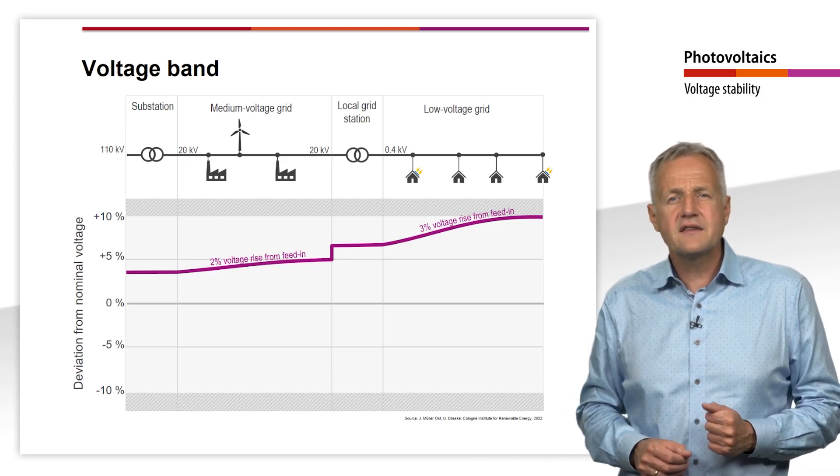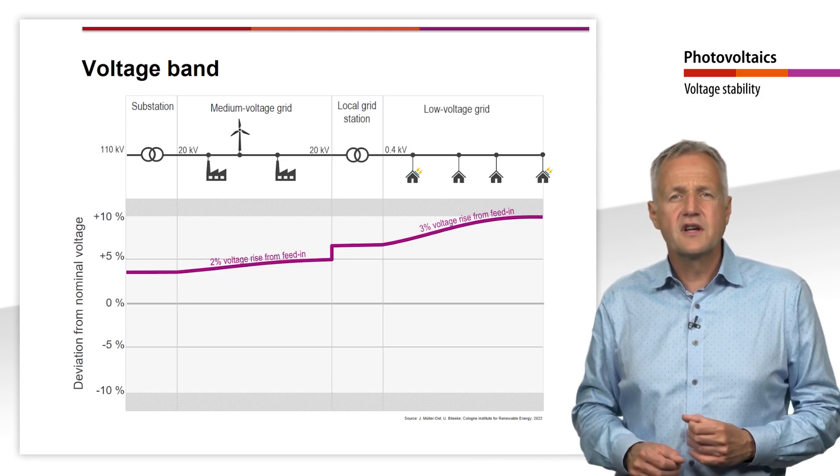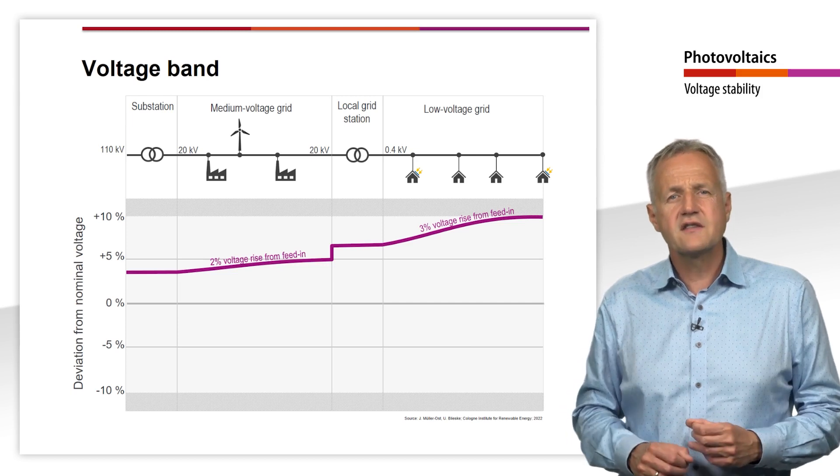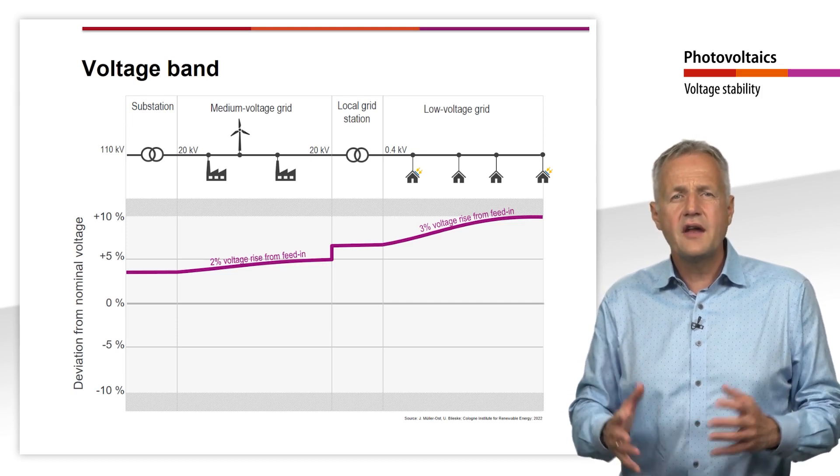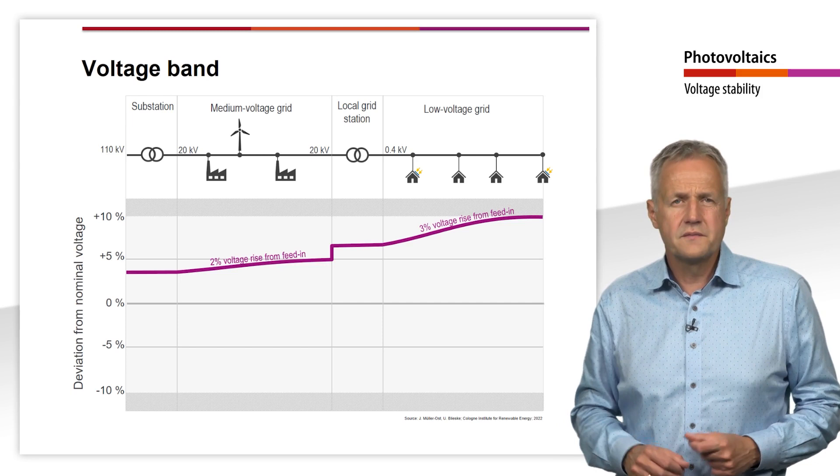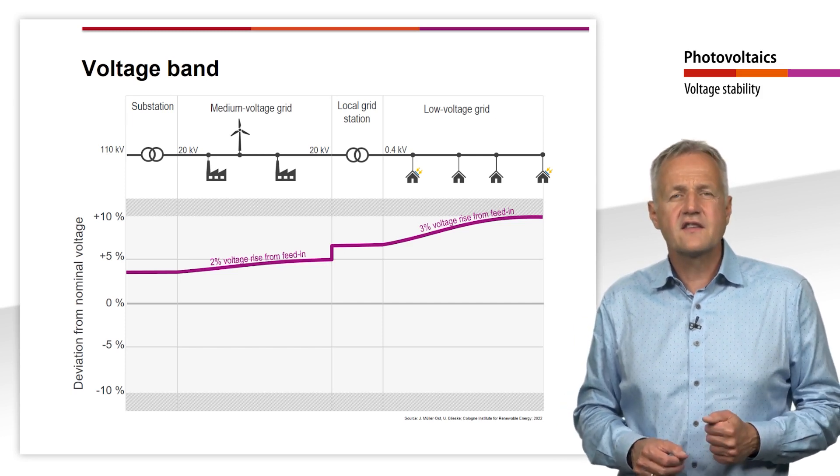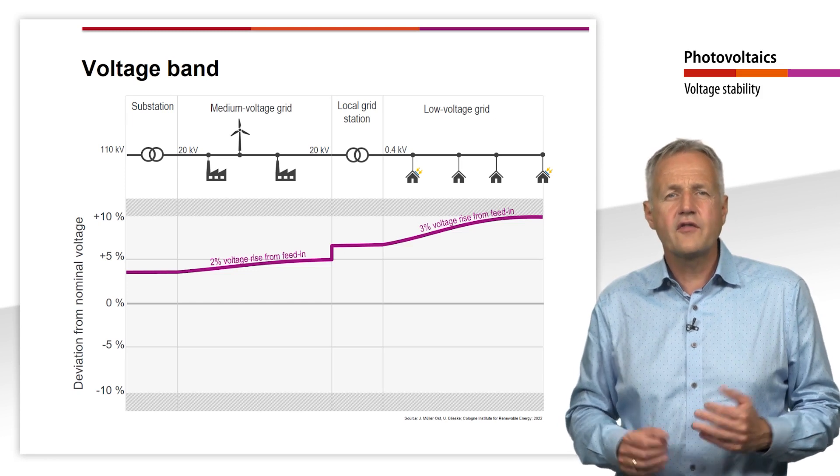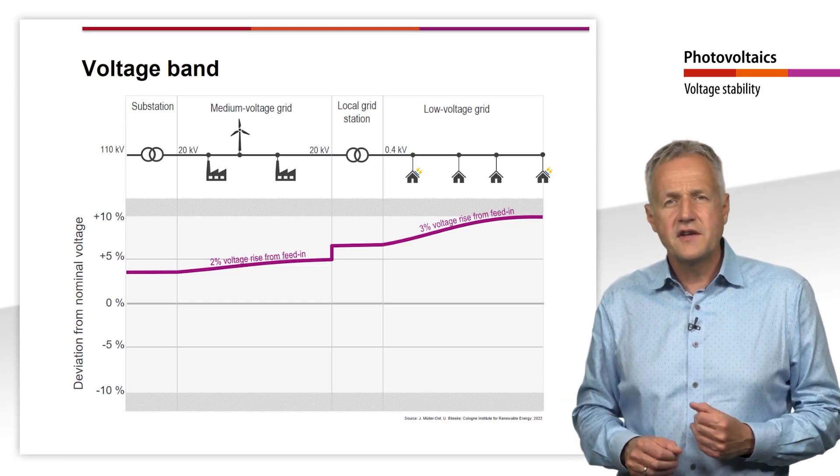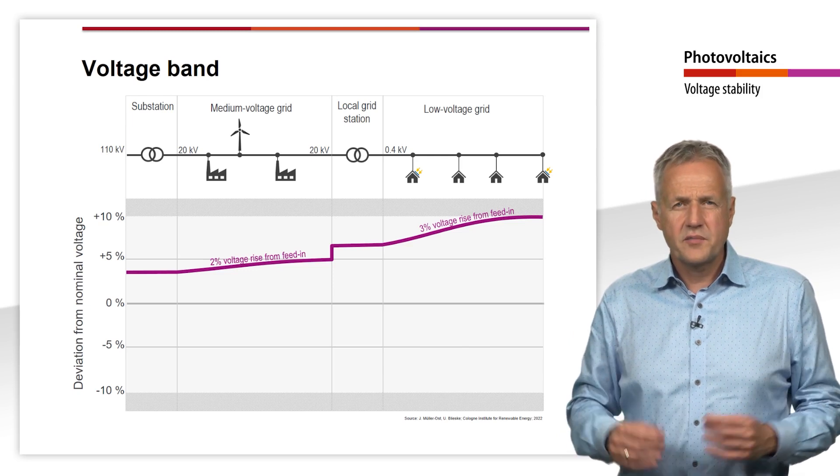The opposite extreme case, that is the lowest voltage, occurs when consumption is at a maximum and feed-in at a minimum. In the low voltage grid, this can be the case in a winter evening, for example, when hardly any PV is feed-in to be expected.